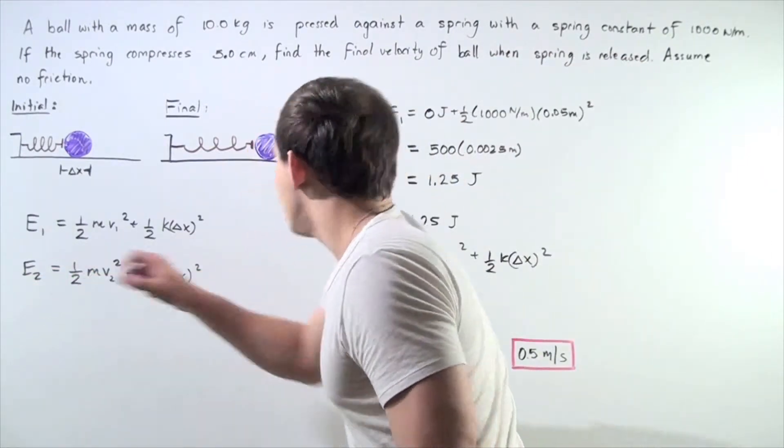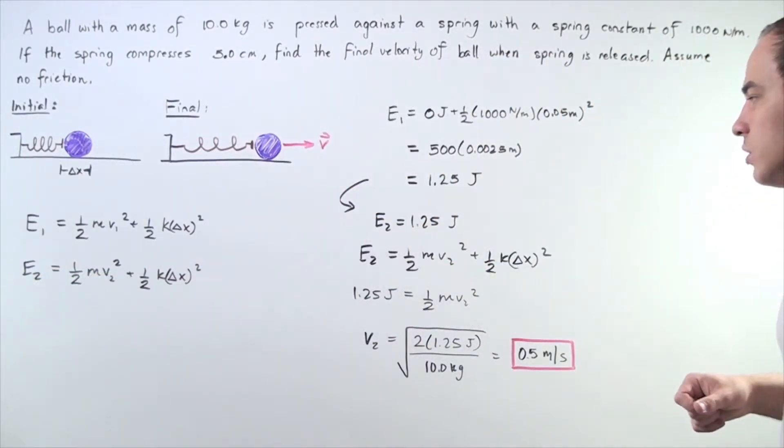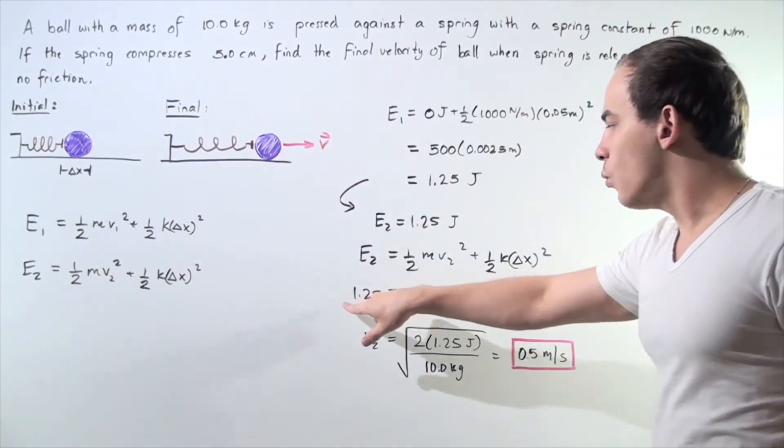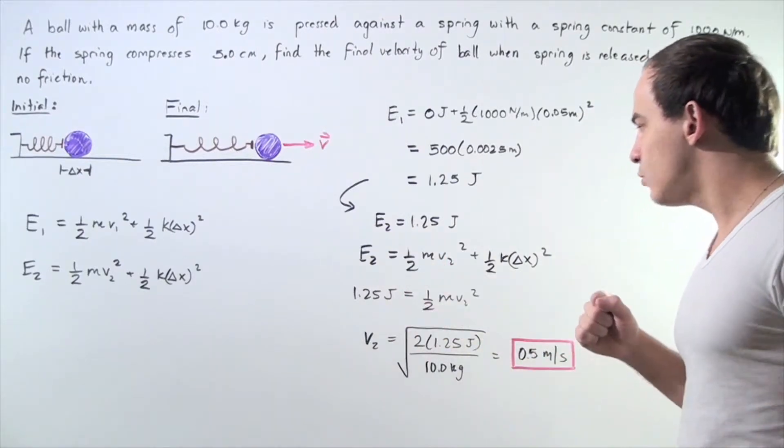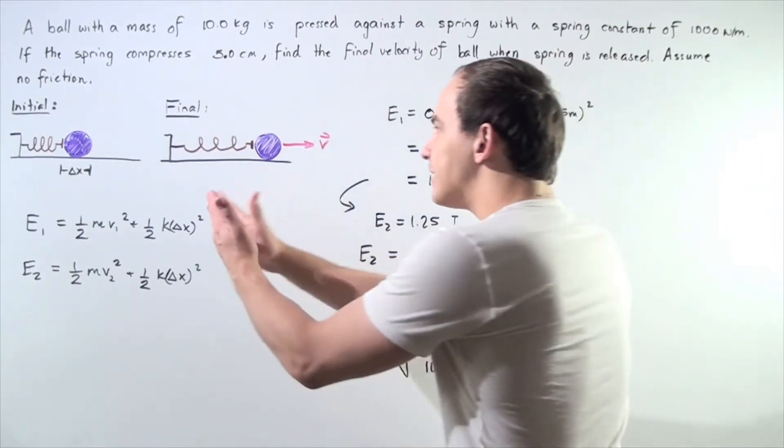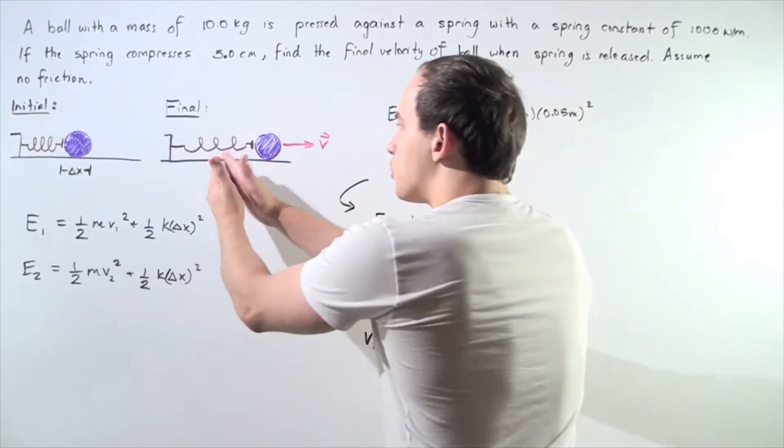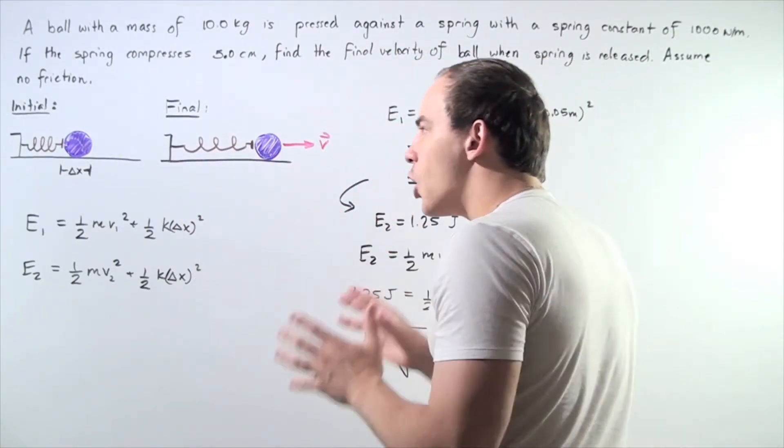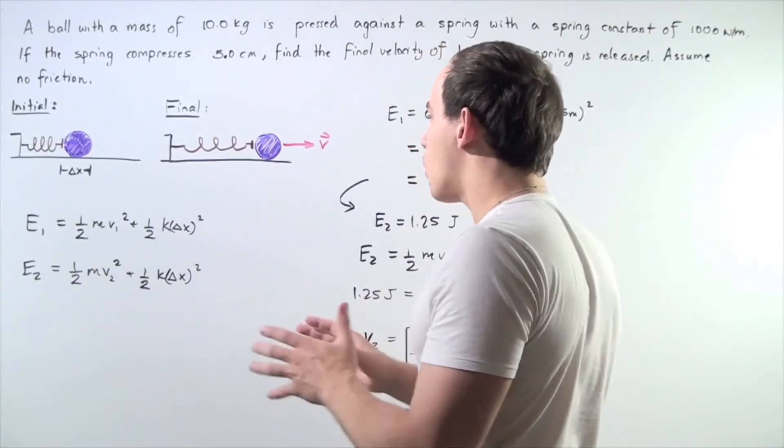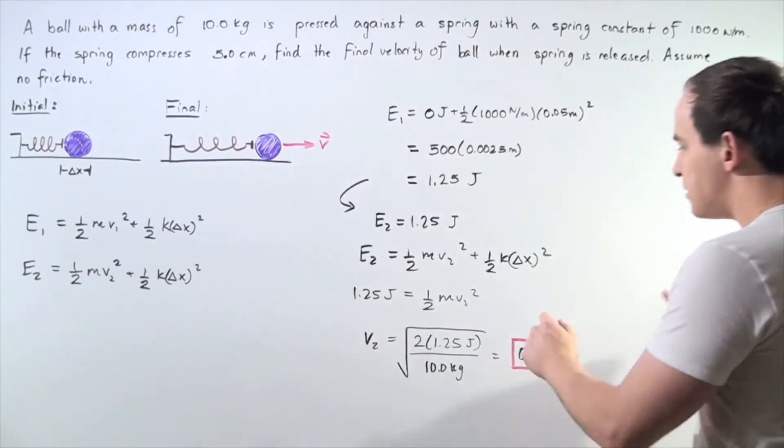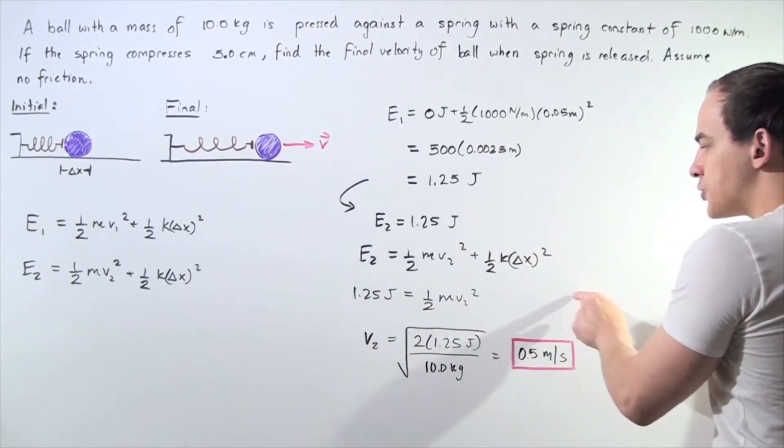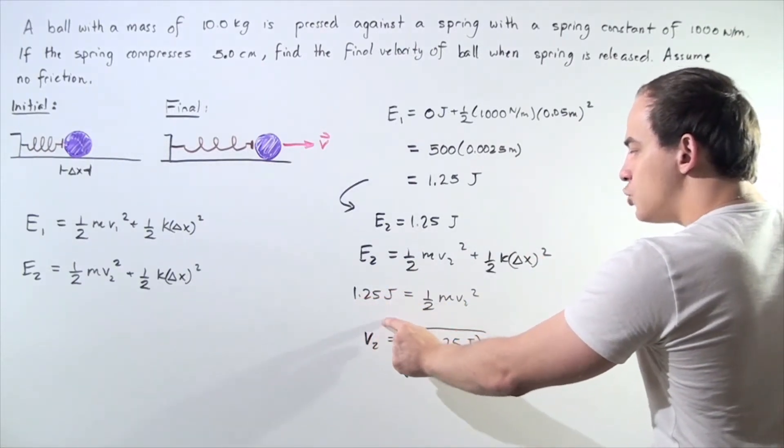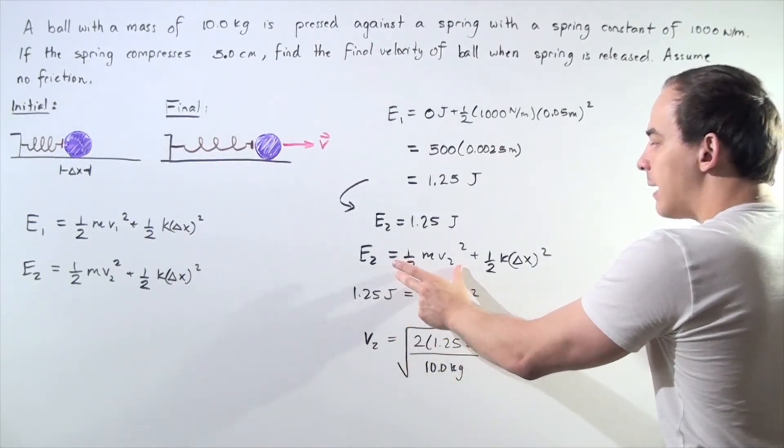So E2 is equal to 1.25 joules. We can use this equation and say 1.25 joules E2 is equal to, well, notice, at the final position, our spring is not stretched and it's not compressed. So that means there's no elastic potential energy stored in the spring. Because change in position is zero, this term goes to zero.